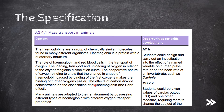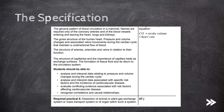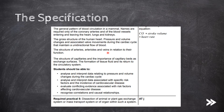In part two, we'll move on to the general pattern of blood circulation in a mammal, then look at the structure of the human heart as well as the pressure and volume changes and associated valve movements during the cardiac cycle. We also need to know the structure of arteries, arterioles, and veins in relation to their function.